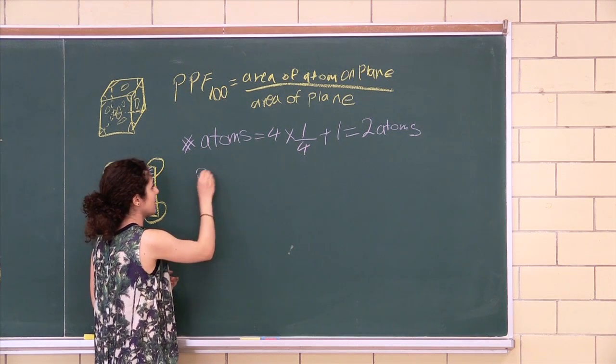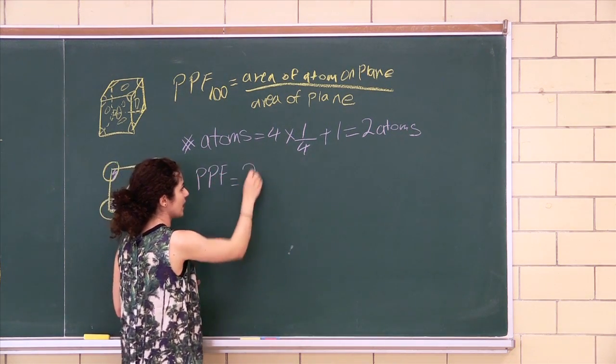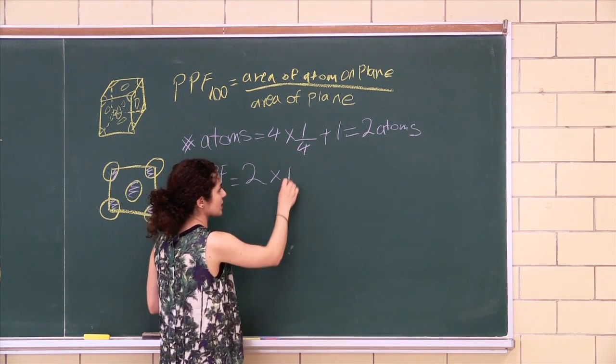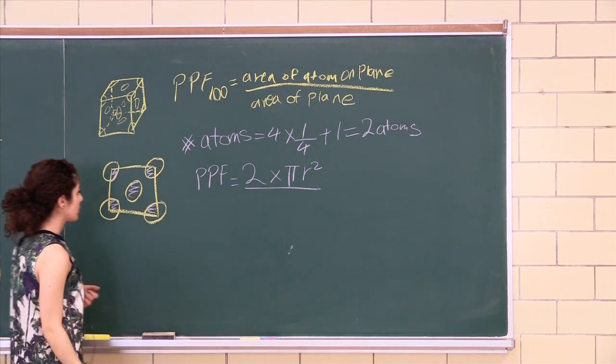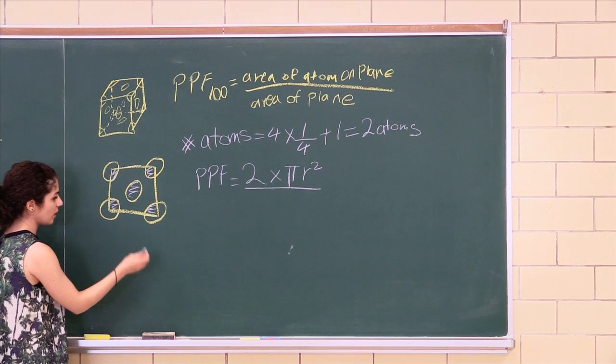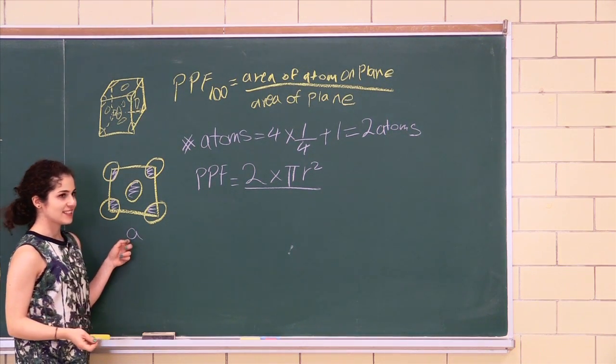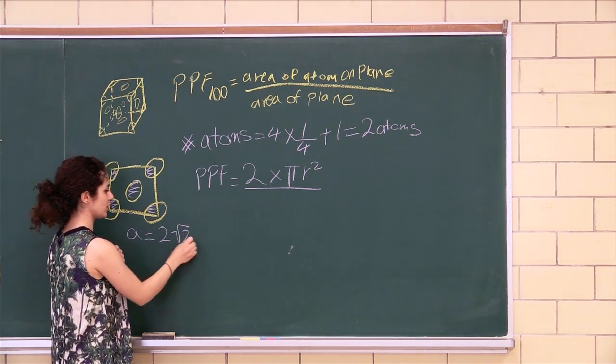So the planar packing factor is 2 atoms times the area of the atom, which is just a circle, πr², all over the area of the plane. And we all should know that each side length is a, and for an FCC, a is 2√2r.